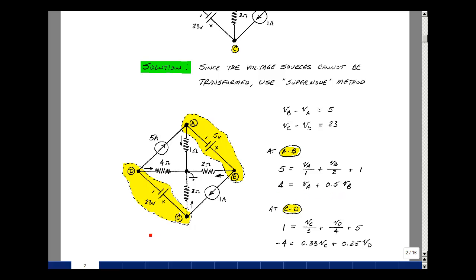Do the same thing for supernode CD. I've got the currents leaving here, and I've got a current entering. So 1 amp is equal to V sub C divided by 3, V sub D divided by 4, and I also have a current source here, 5 amps leaving.